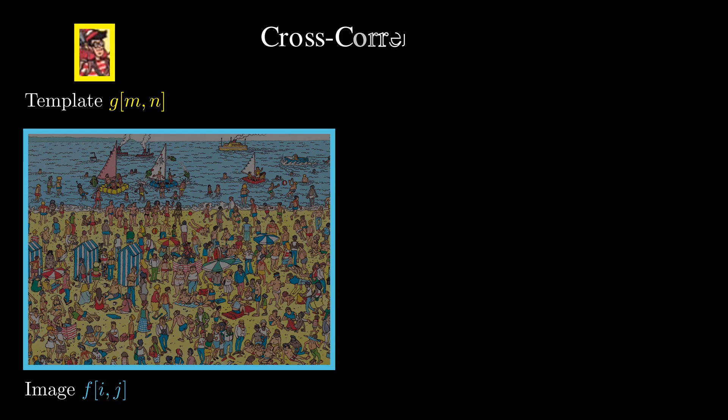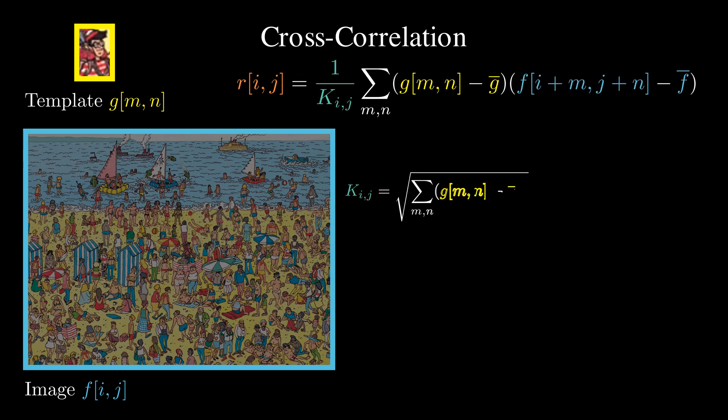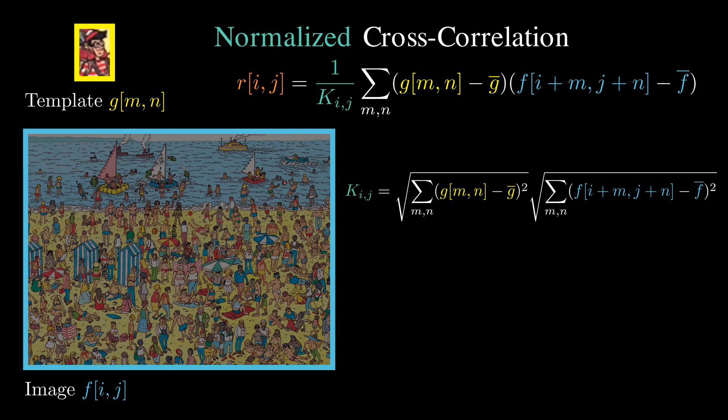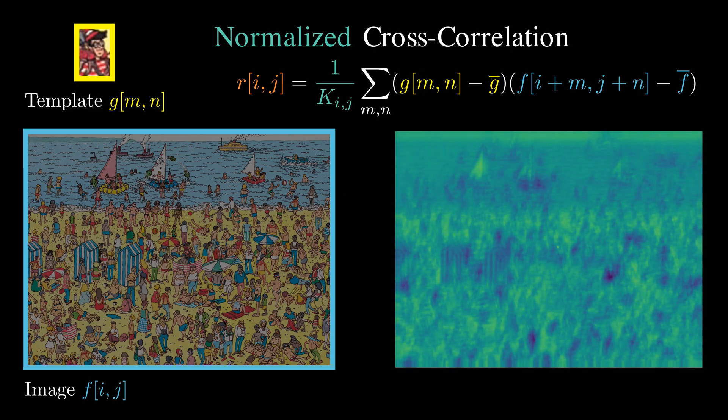Let's revisit the cross-correlation with zero-mean filter. What we need is to normalize the intensity of both the template and the local image patch by subtracting the mean intensities. Then we normalize the contrast by dividing by the sample standard deviation. This is called normalized cross-correlation. It is invariant to brightness and contrast changes.